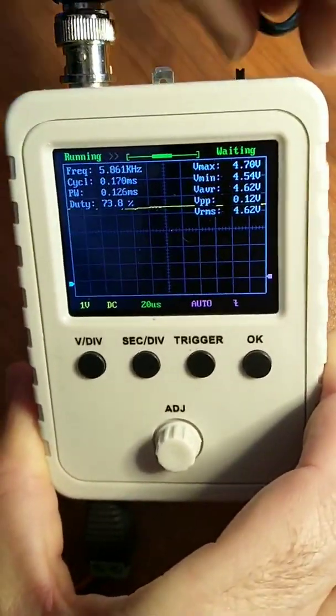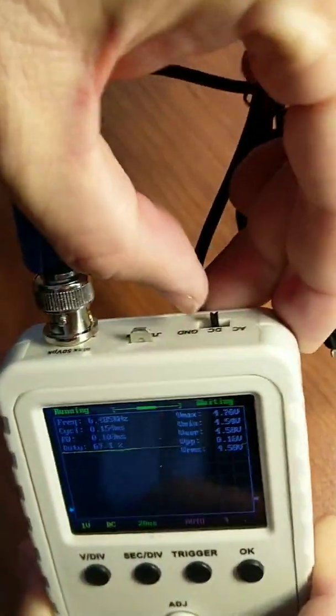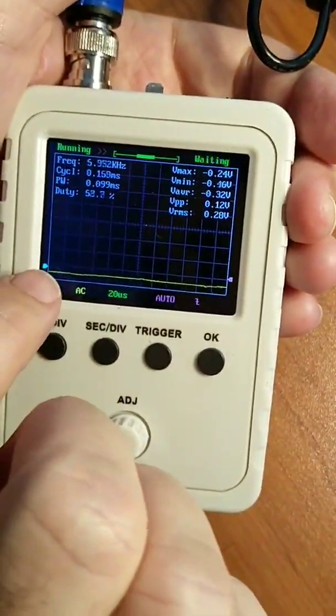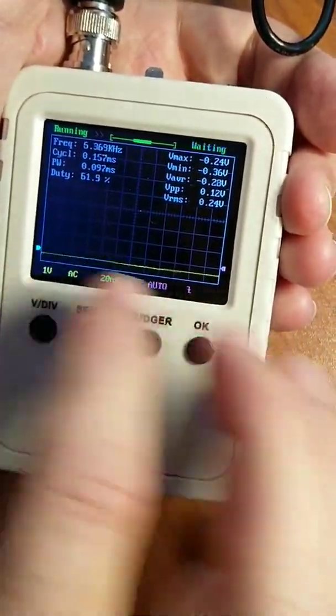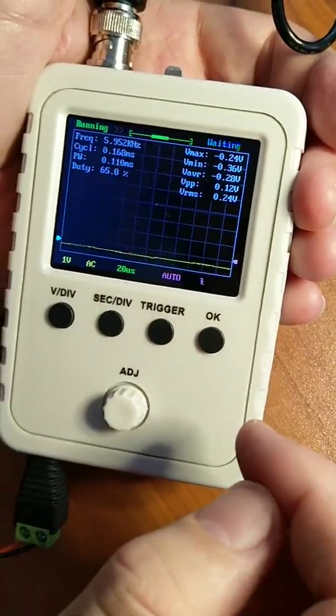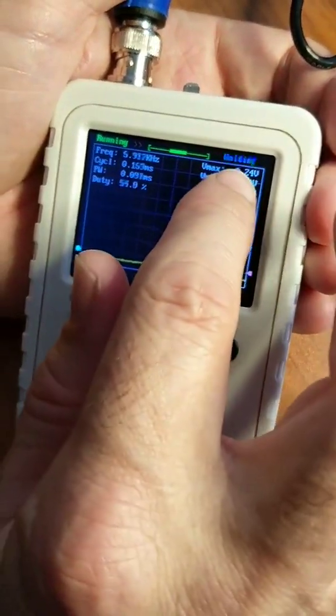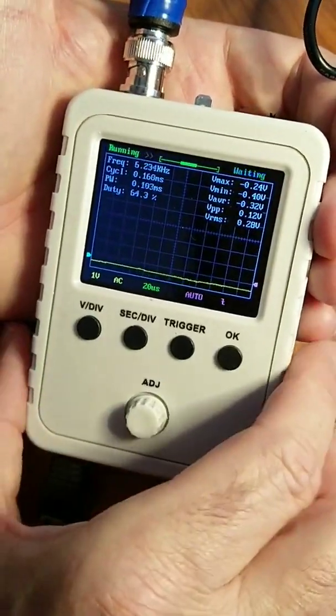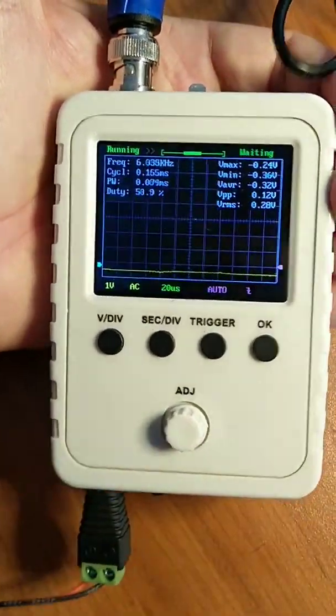Another thing, while I'm on here: if I switch this to AC coupling now, that line falls to zero because with AC coupling you remove the DC component completely. As we can see, there's very little noise on this power supply. So that's the basics of using the DSO-150.